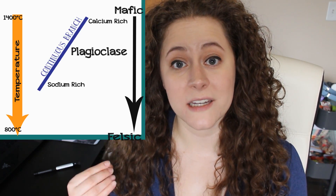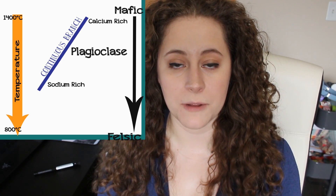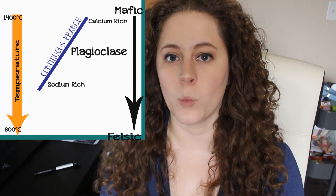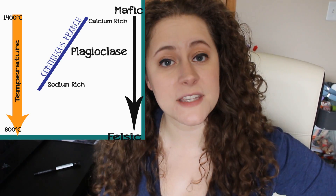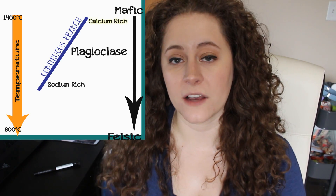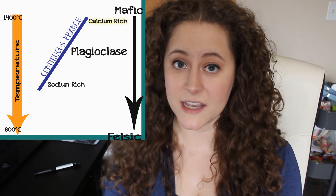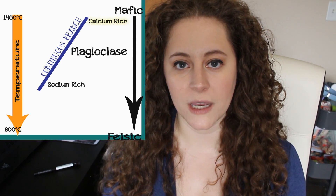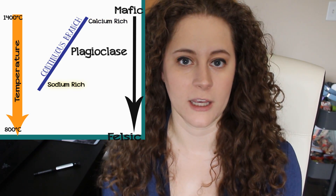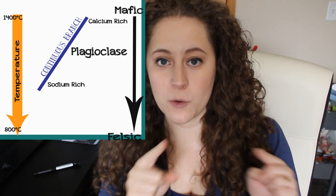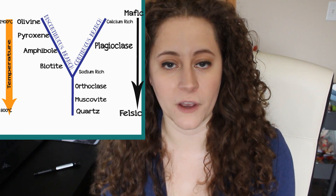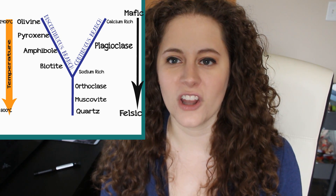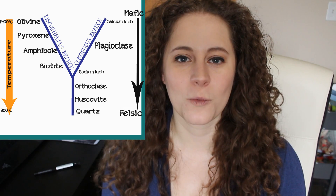On the opposite side is the Continuous Reaction Series, and this deals with the Plagioclase feldspars. So instead of changing minerals, we are simply changing one type of mineral. At the same temperature that olivine crystallizes, so will calcium-rich Plagioclase. And as you reduce the temperature of the magma, more sodium will crystallize out and create a more sodium-rich variety of Plagioclase. As you continue down the sequence, the two branches eventually join up, and then you start to crystallize your feldspars — your orthoclase feldspars, your muscovite, and then quartz, the slug of the mineral world.